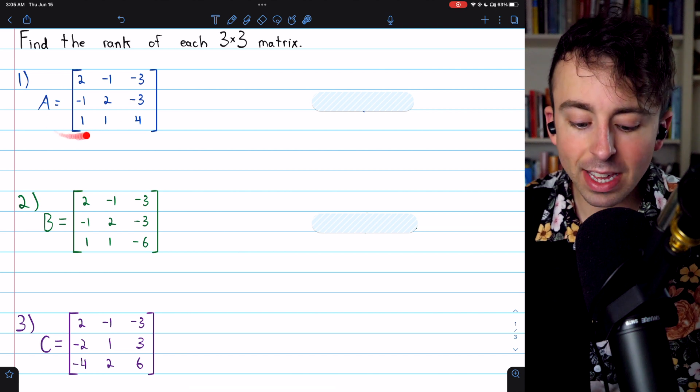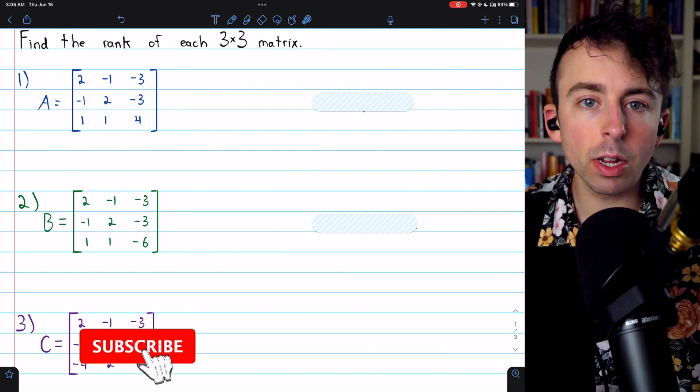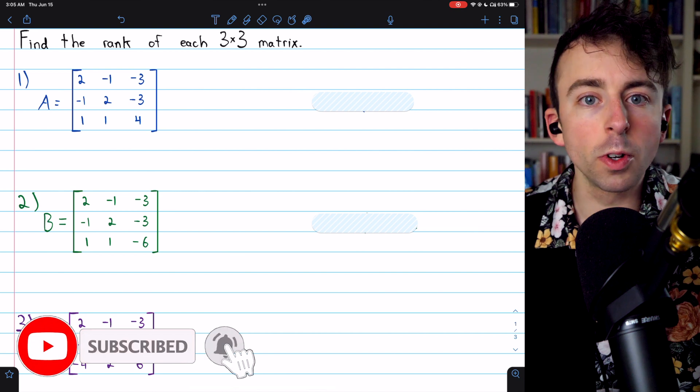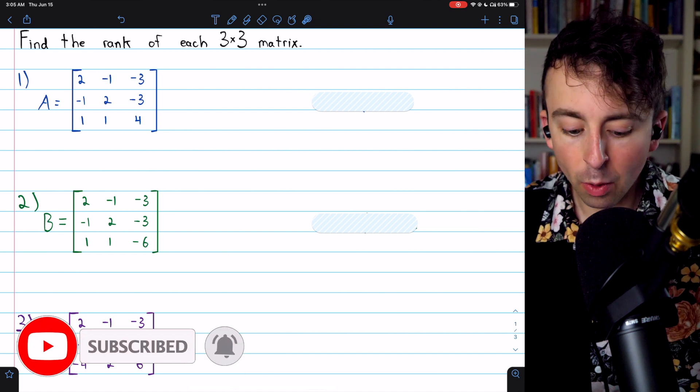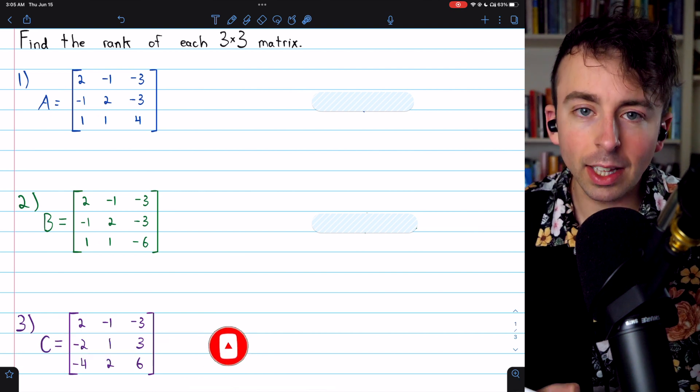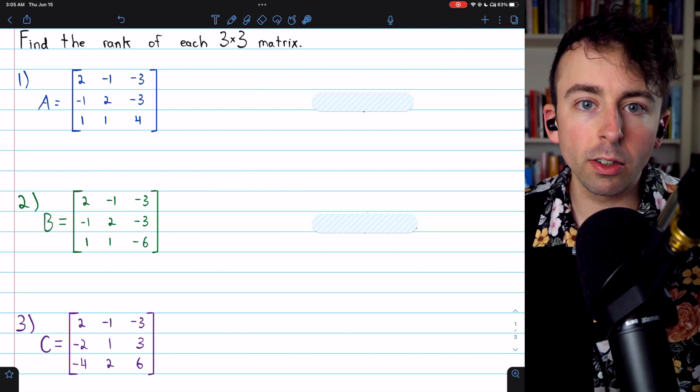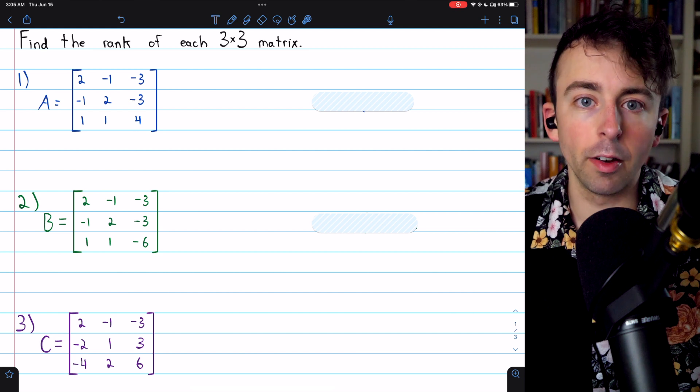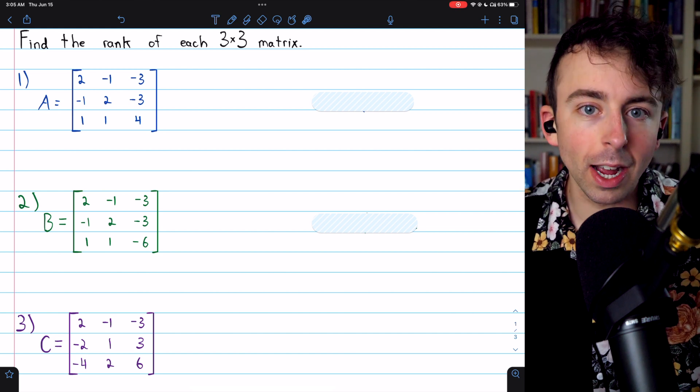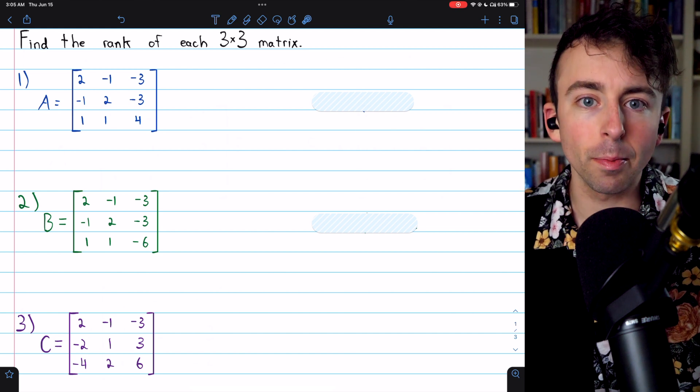We're going to find the ranks of these three three-by-three matrices by putting them into reduced row echelon form. We're going to go through the first two pretty quickly, and then the third one will be slightly more in-depth. I'll leave links in the description to my other lessons on finding the ranks of matrices that are more introductory. This one is just some more basic practice.